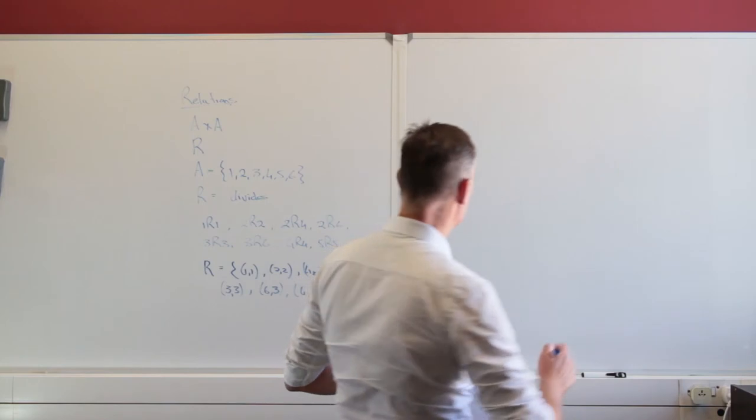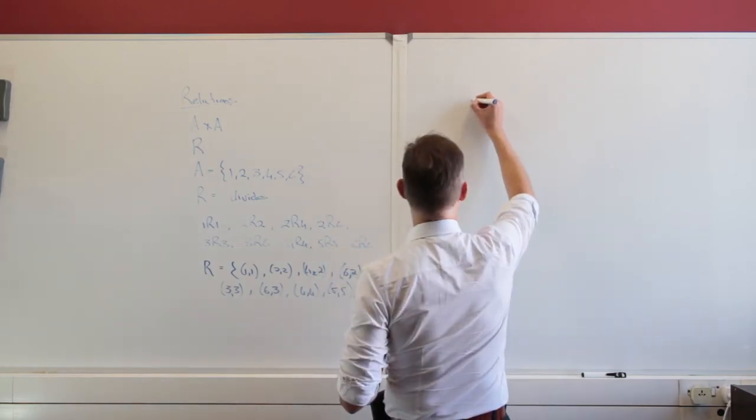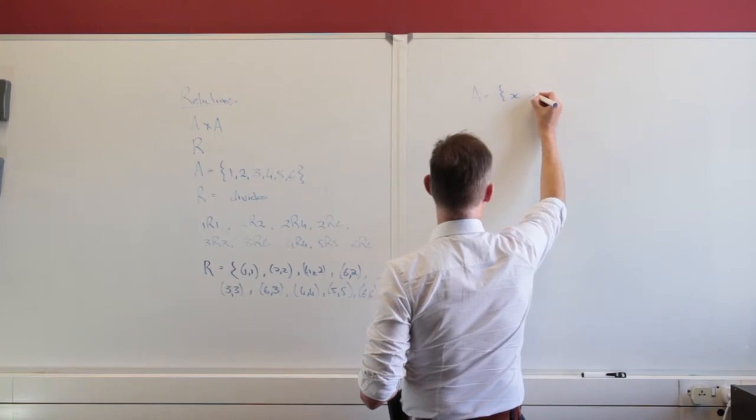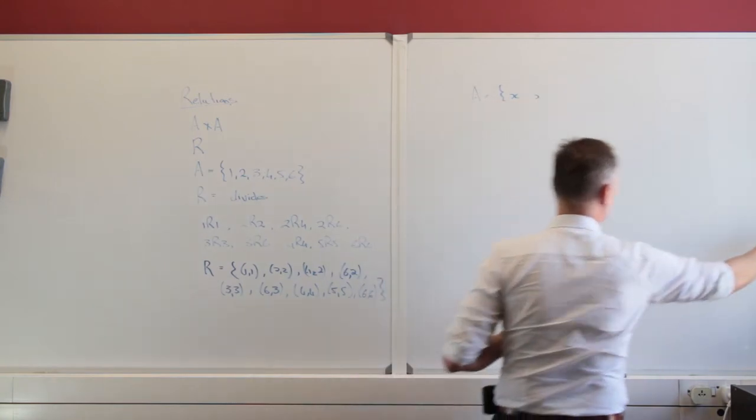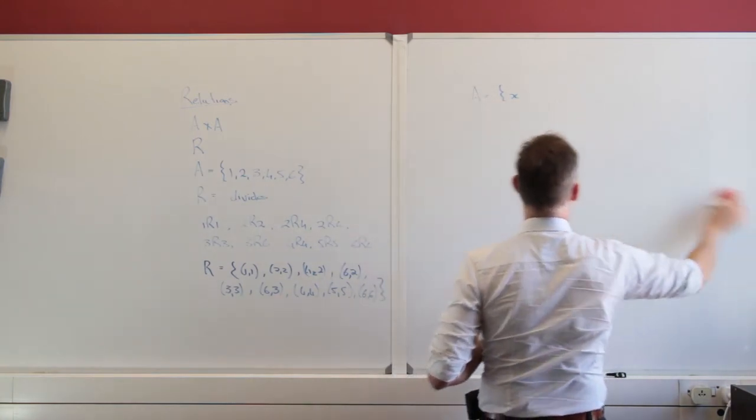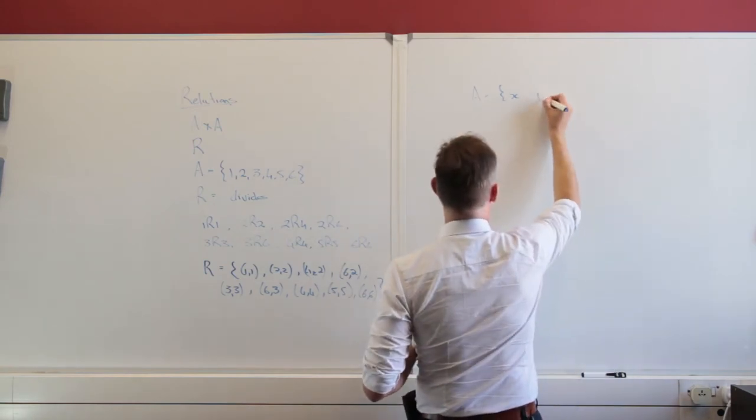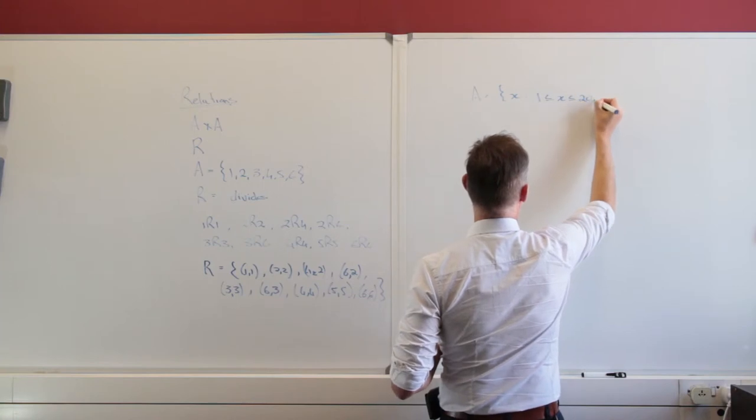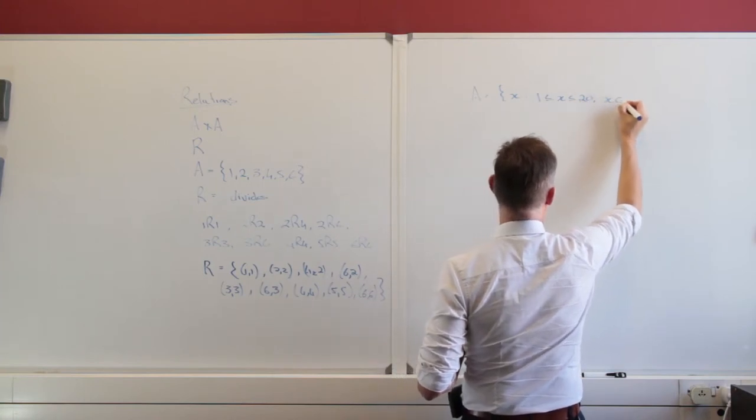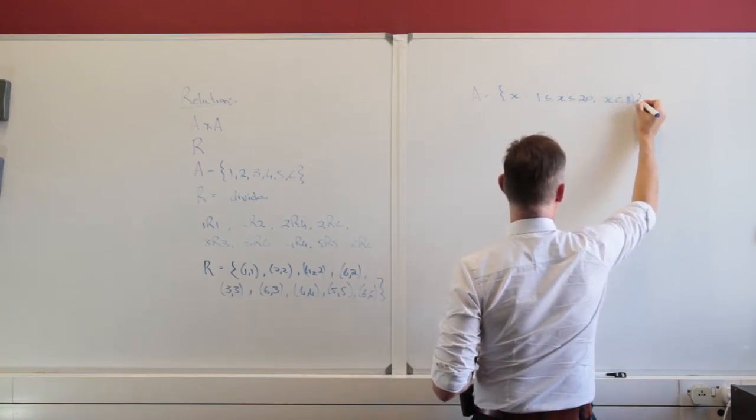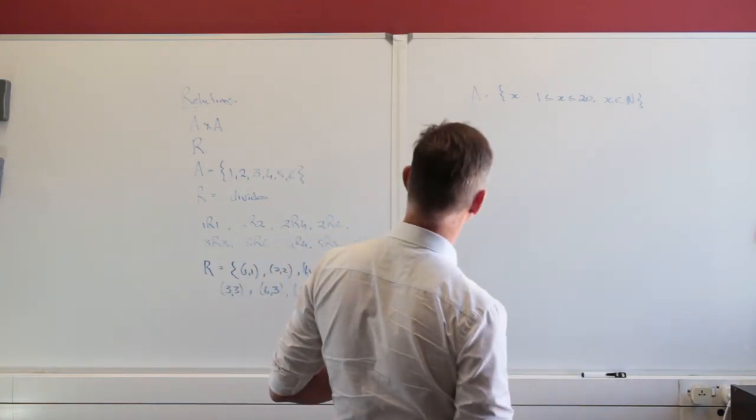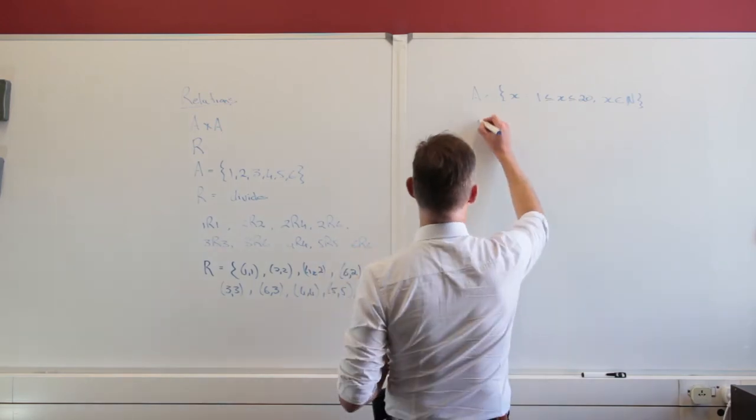Let's look at one more relation. Let's have my set A. My set A is the set of all elements x such that 1 is less than or equal to x, which is less than or equal to 20, and I have the fact that x is an element of the set of natural numbers. So 1, 2, 3, 4, 5 until 20.